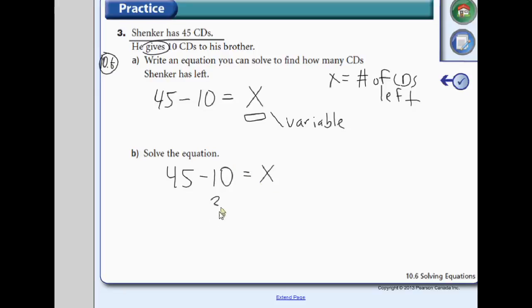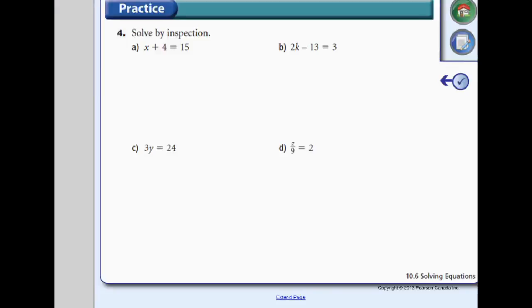Well, 45 minus 10 equals 35. So Shankar has 35 CDs left. So if you were to properly write the answer down, you would write, Shankar has 35 CDs left. Who has CDs anymore, anyway? We don't even own CDs.